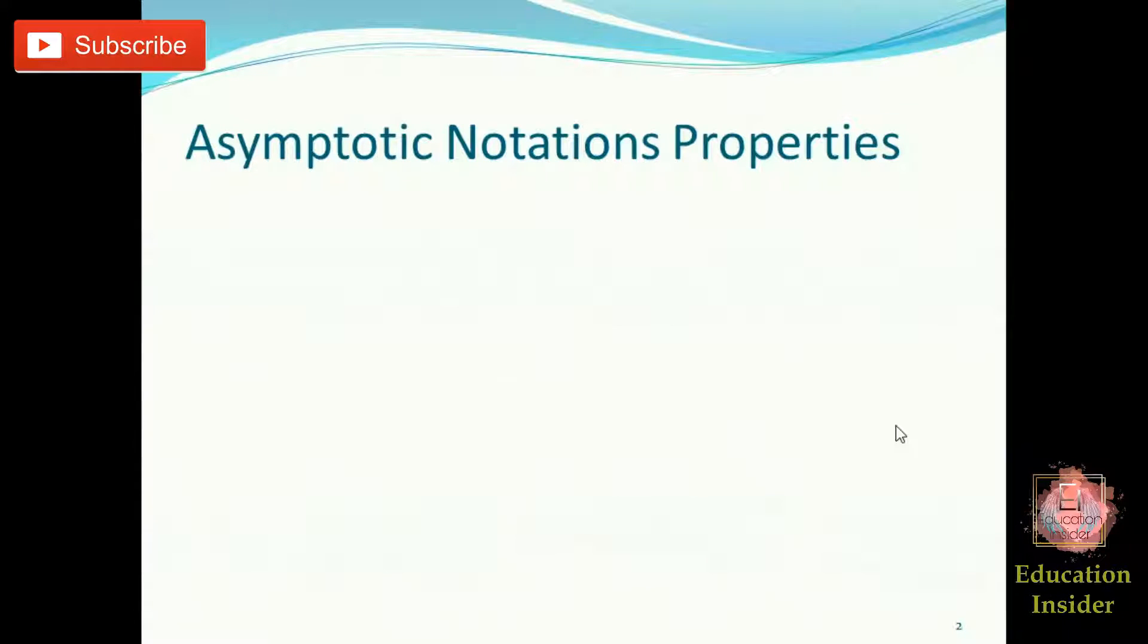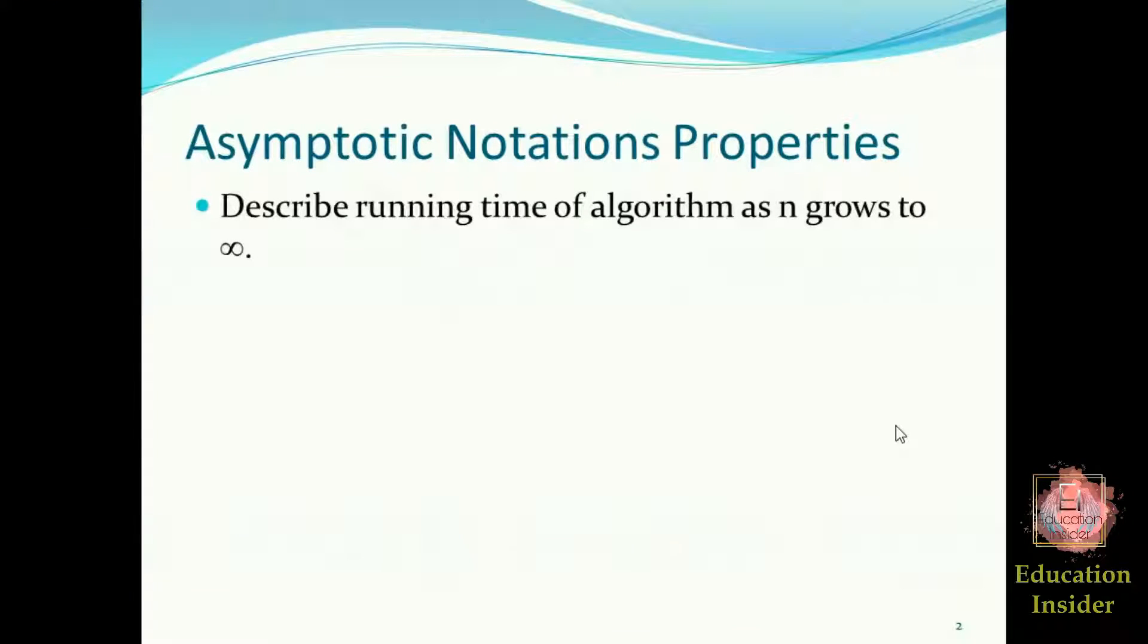These languages, for example Big O, Big Theta, Big Omega, etc., are asymptotic notations. Asymptotic notations describe the running time of algorithms as n grows to very large numbers, for example infinity.